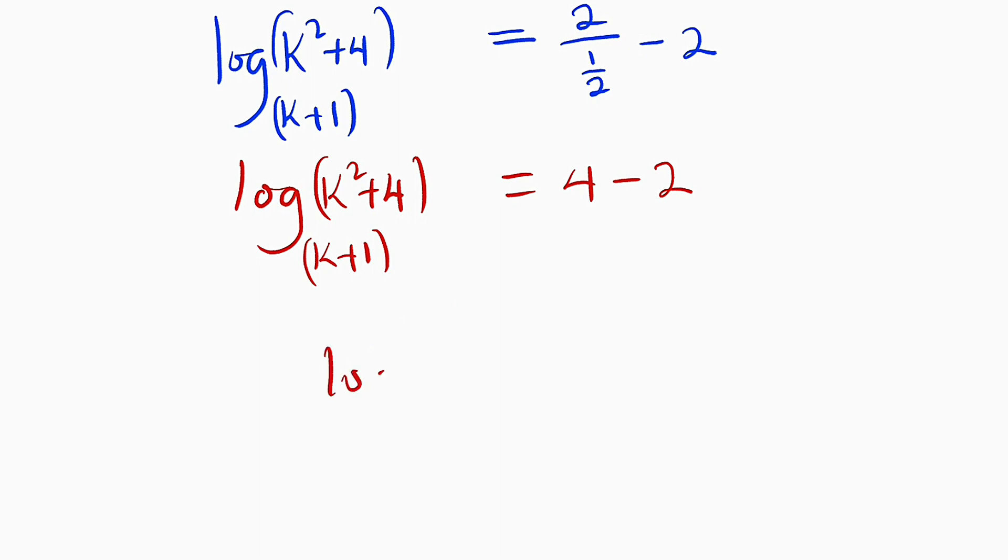We have log of k squared plus 4 with the base of k plus 1. This is equal to 2 because 4 minus 2 is equal to 2. Now we can apply definition of logarithm here that stated that this k plus 1 which is our base raised to the power of this 2 will be equal to the argument here, k squared plus 4.